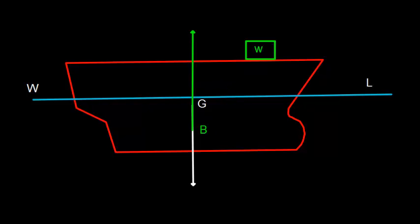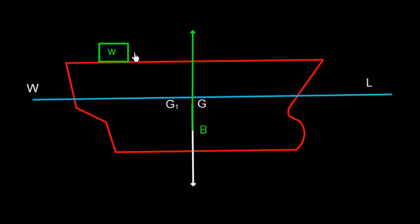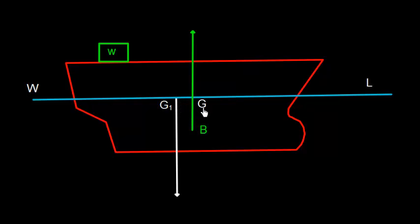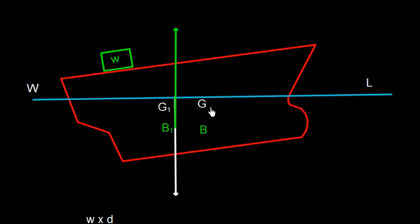Now assume that we have a weight of small w tons, and we shift this weight from forward to aft. So this weight small w is shifted from forward to aft with distance D. Because this weight is shifted from forward to aft, it will also shift the position of the center of gravity. The center of gravity will shift from G to G1 in this direction, and the weight force will now act from G1 instead of G, which will trim the ship.